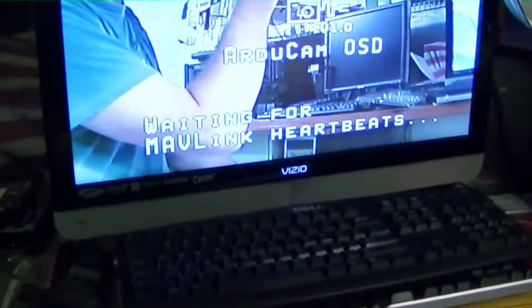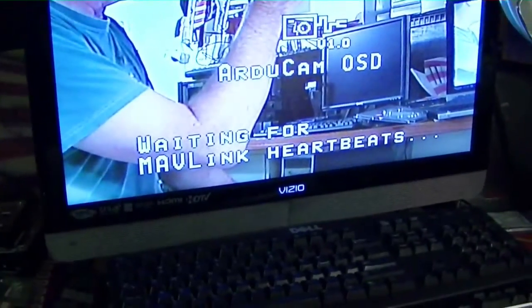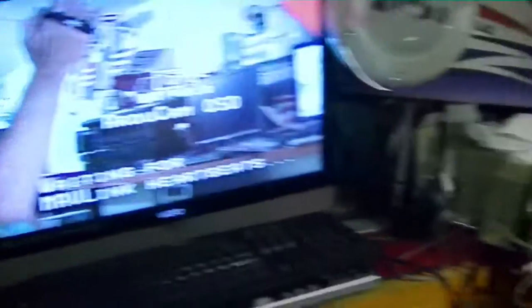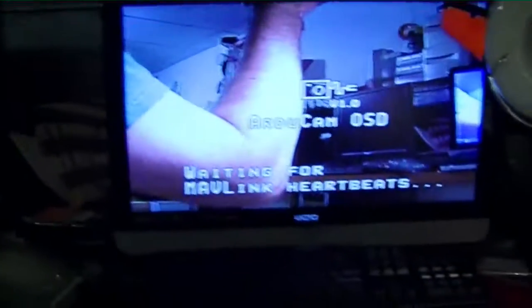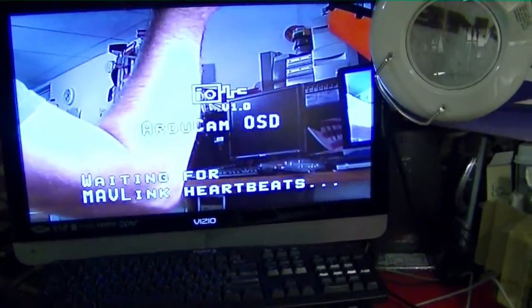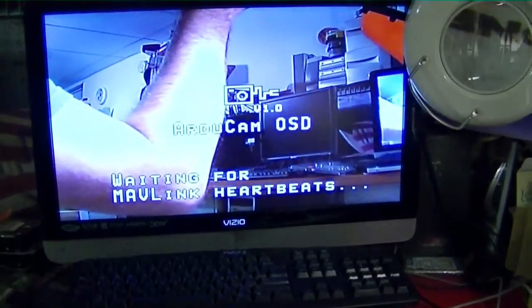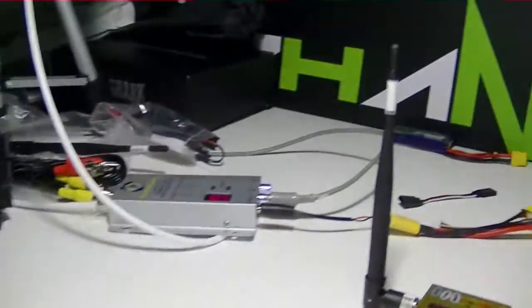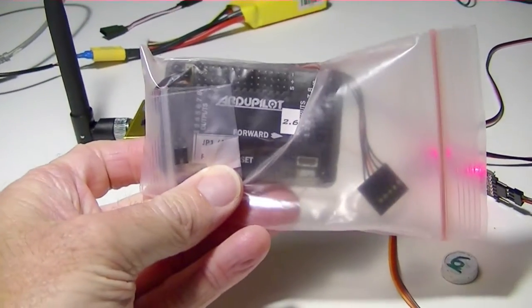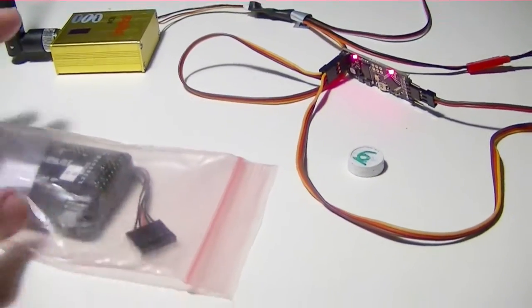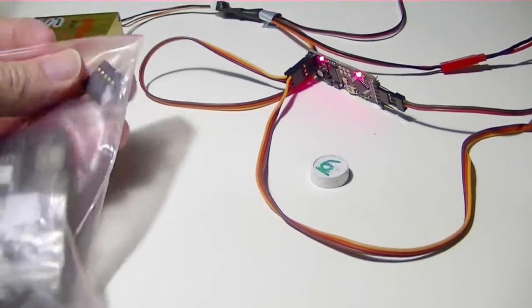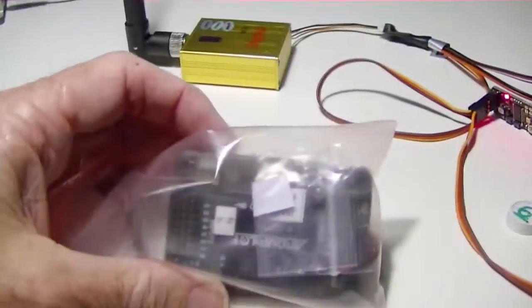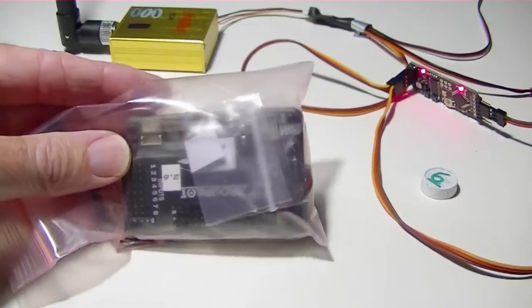It's just asking for the Mavlink heartbeats because there's no data coming in from the telemetry device. All the minimum OSD does is display information. It doesn't provide it. It doesn't even gather it. All it's doing is looking for a data stream from a device that provides telemetry. And for us, that's going to be the ArduPilot Mega. Here's the ArduPilot Mega, still in its bag. And this little cable here will eventually hook on where I've got this battery pack providing the five volts. The ArduPilot Mega is going to provide the five volts and also the telemetry data. So we'll get to that later.